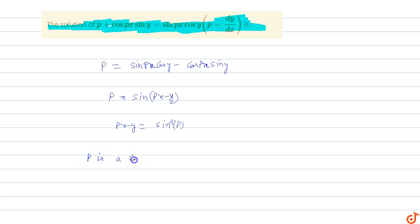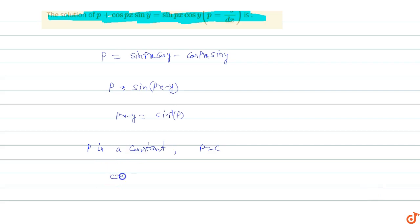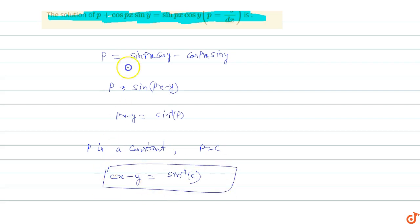With p replaced by constant c, the solution of the differential equation is cx − y = sin⁻¹(c). So the solution of (p + cos(px))·sin(y) = sin(px)·cos(y) is cx − y = sin⁻¹(c).